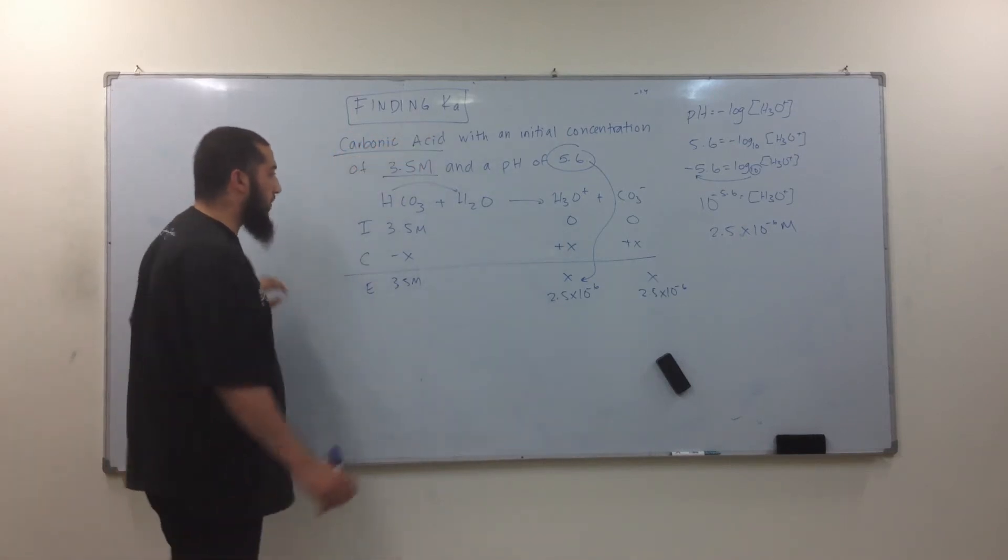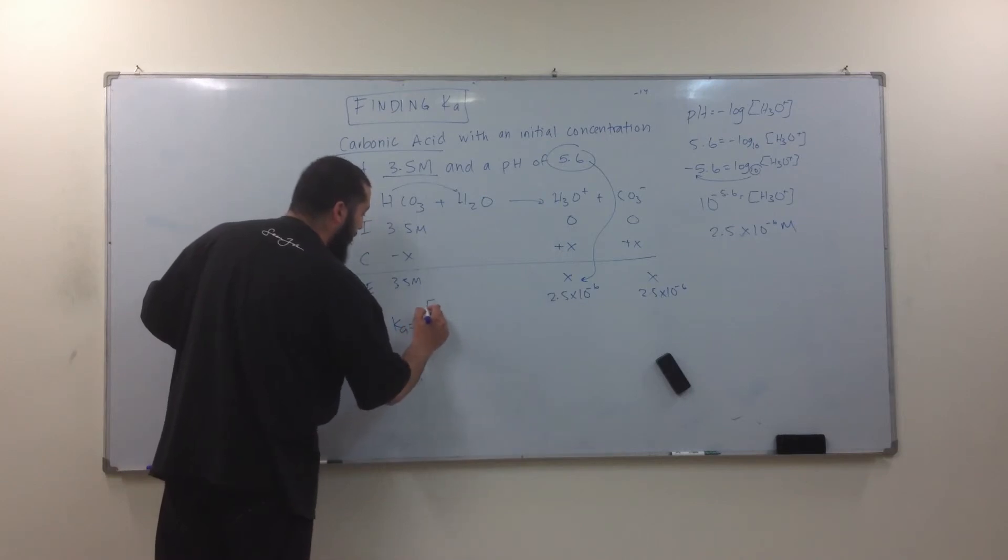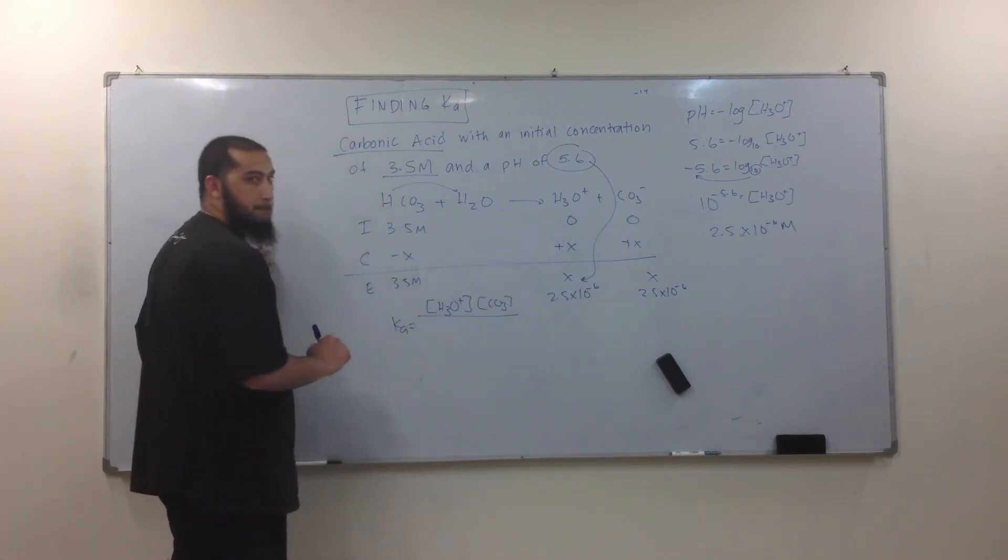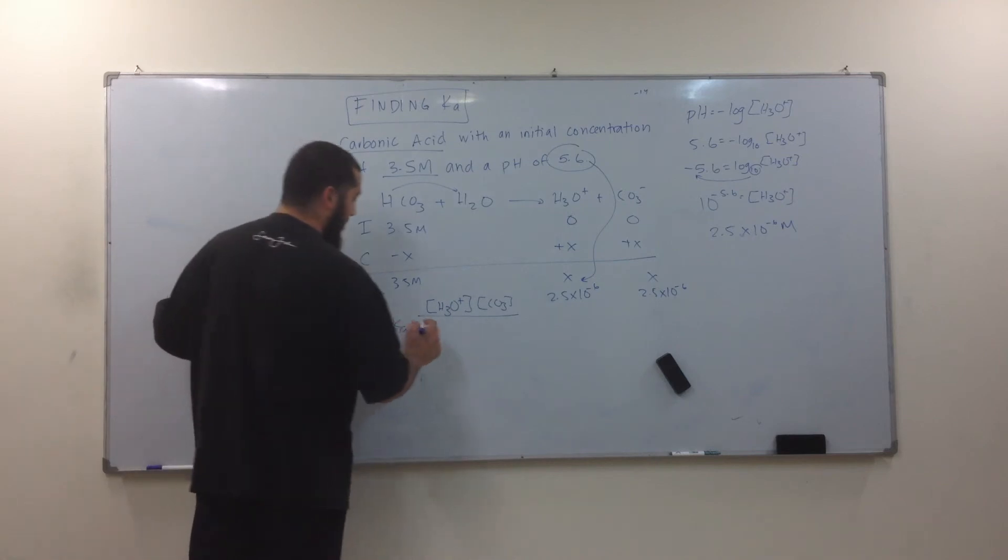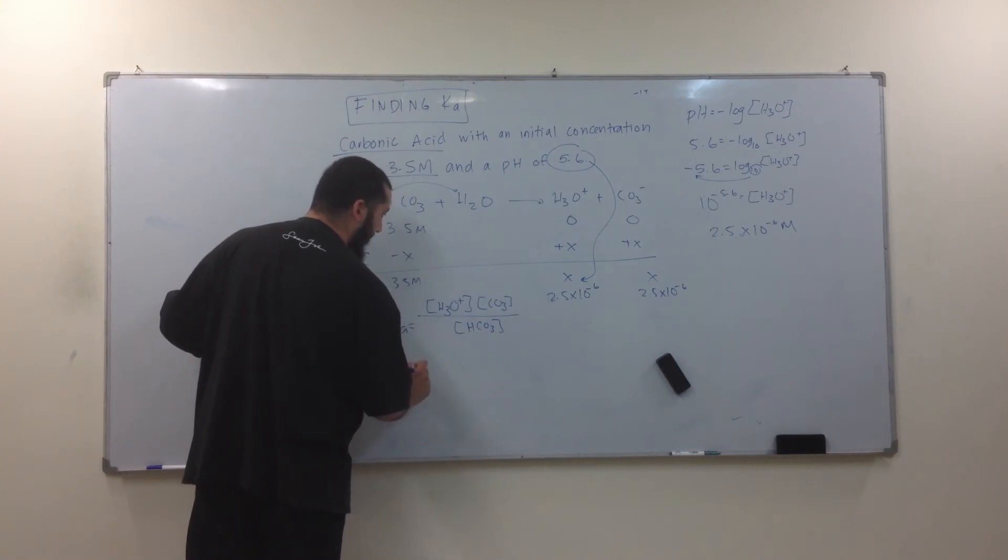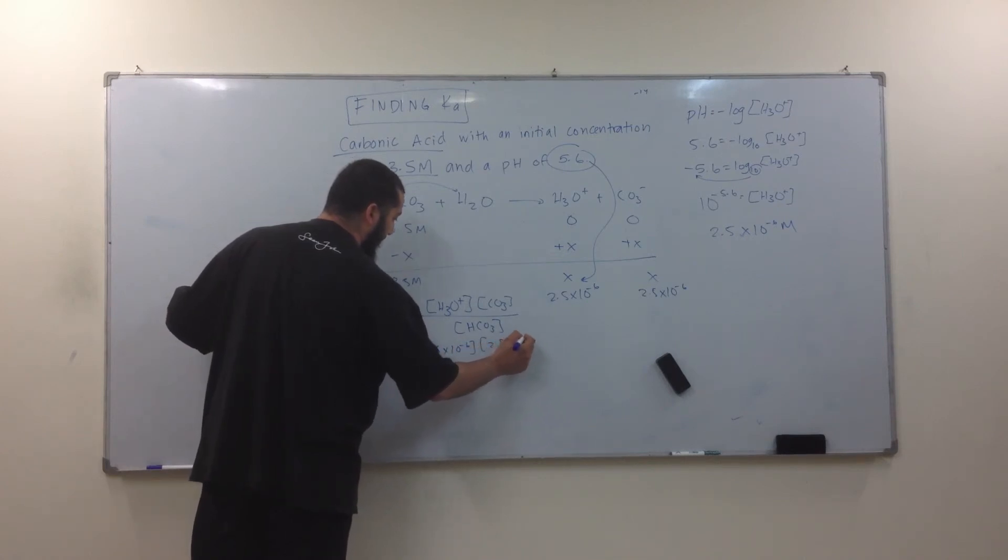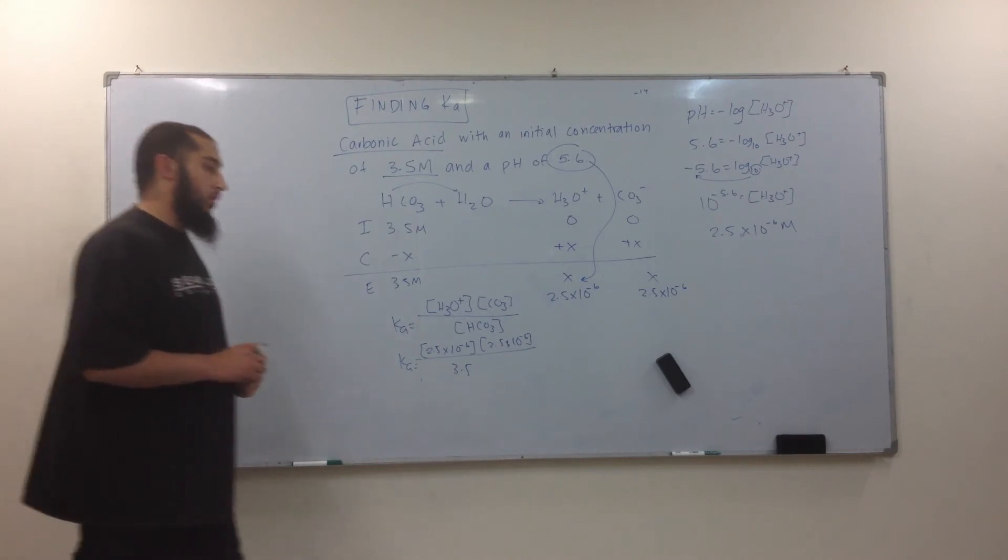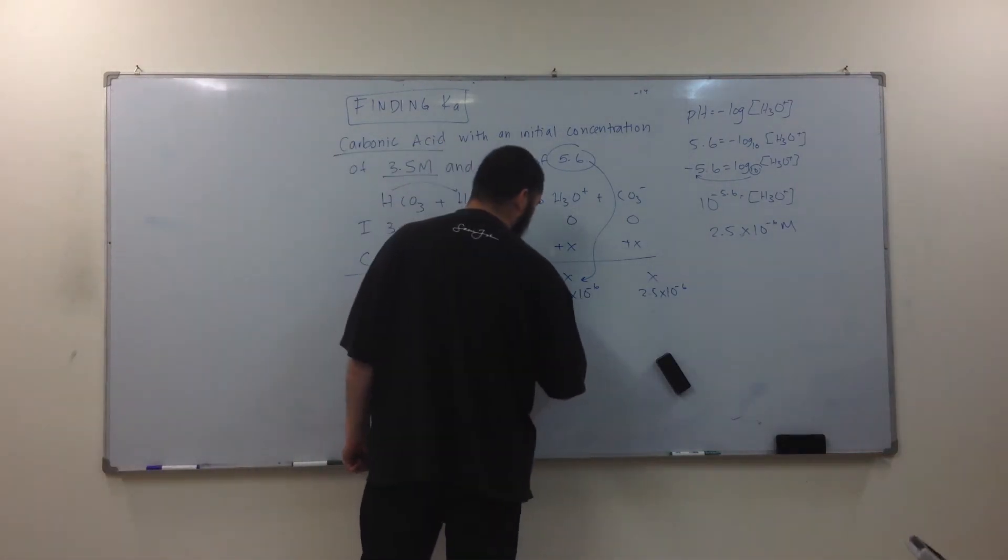I have my Ka. So what's my Ka? Ka is the concentration of H3O+ times the concentration of CO3 minus. Divided by what? H2CO3. Now what do I do? Plug in the numbers. 2.5 times 10 to the negative 6 times 2.5 times 10 to the negative 6, divided by 3.5. What about it? Equals 1.8 times 10 to the negative 4.